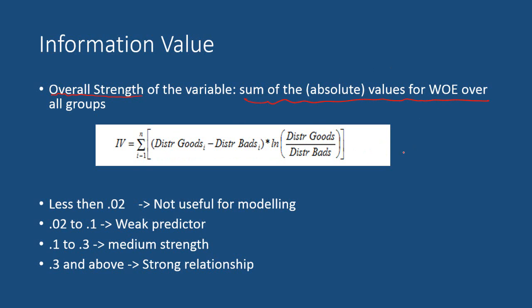In the previous video on WOE we discussed how to calculate the weight of evidence. Using those same values we can calculate the information value of a variable. The formula is the summation across all groups of the distribution of goods minus the distribution of bads, multiplied by the logarithm of distribution of goods divided by distribution of bads. Note that the log here uses base E, so it is better to use ln instead of log.